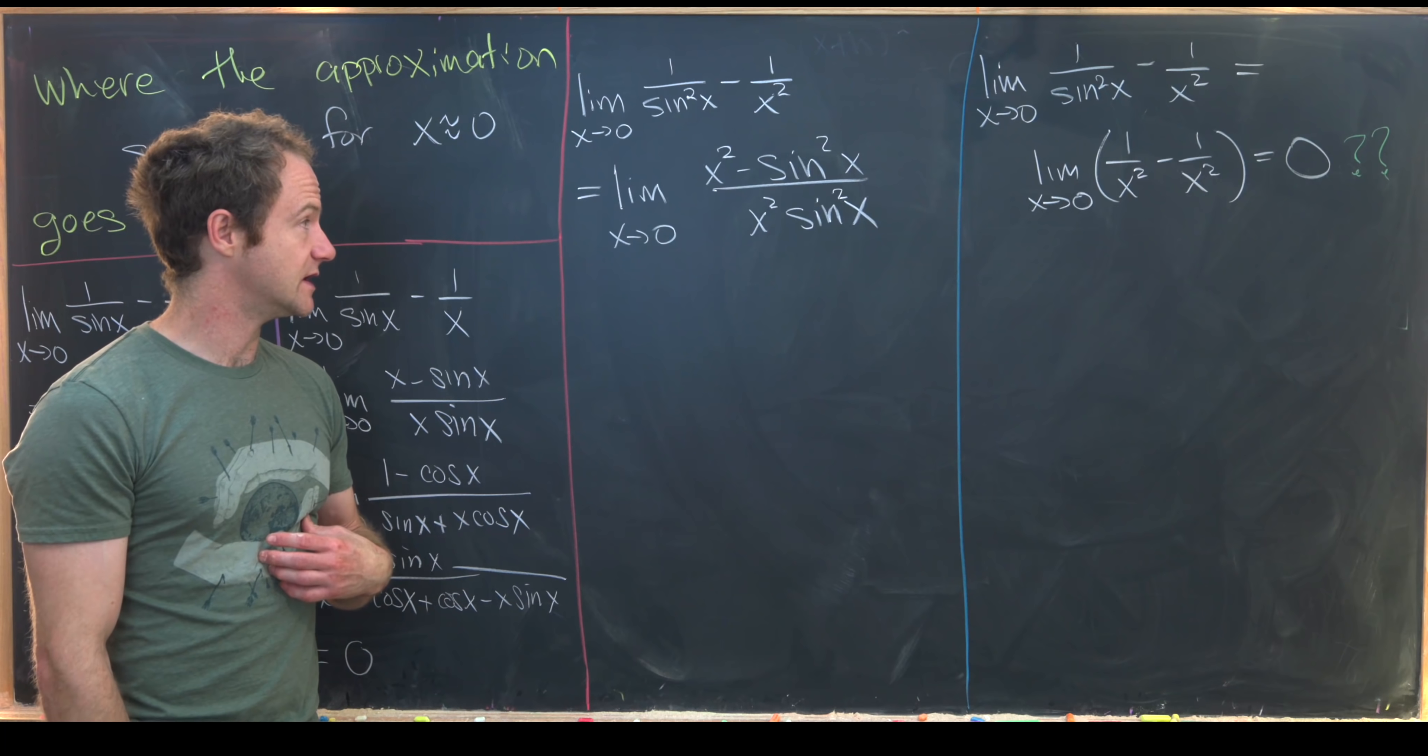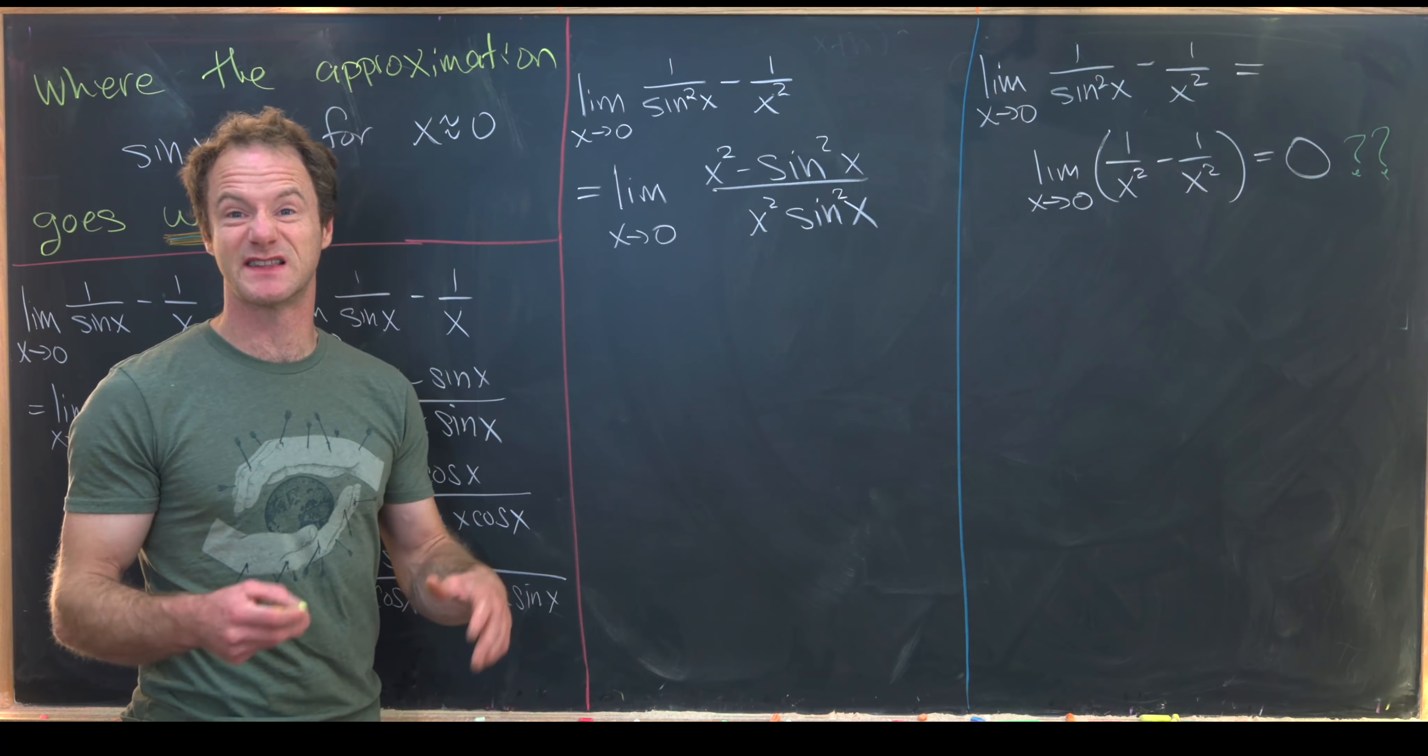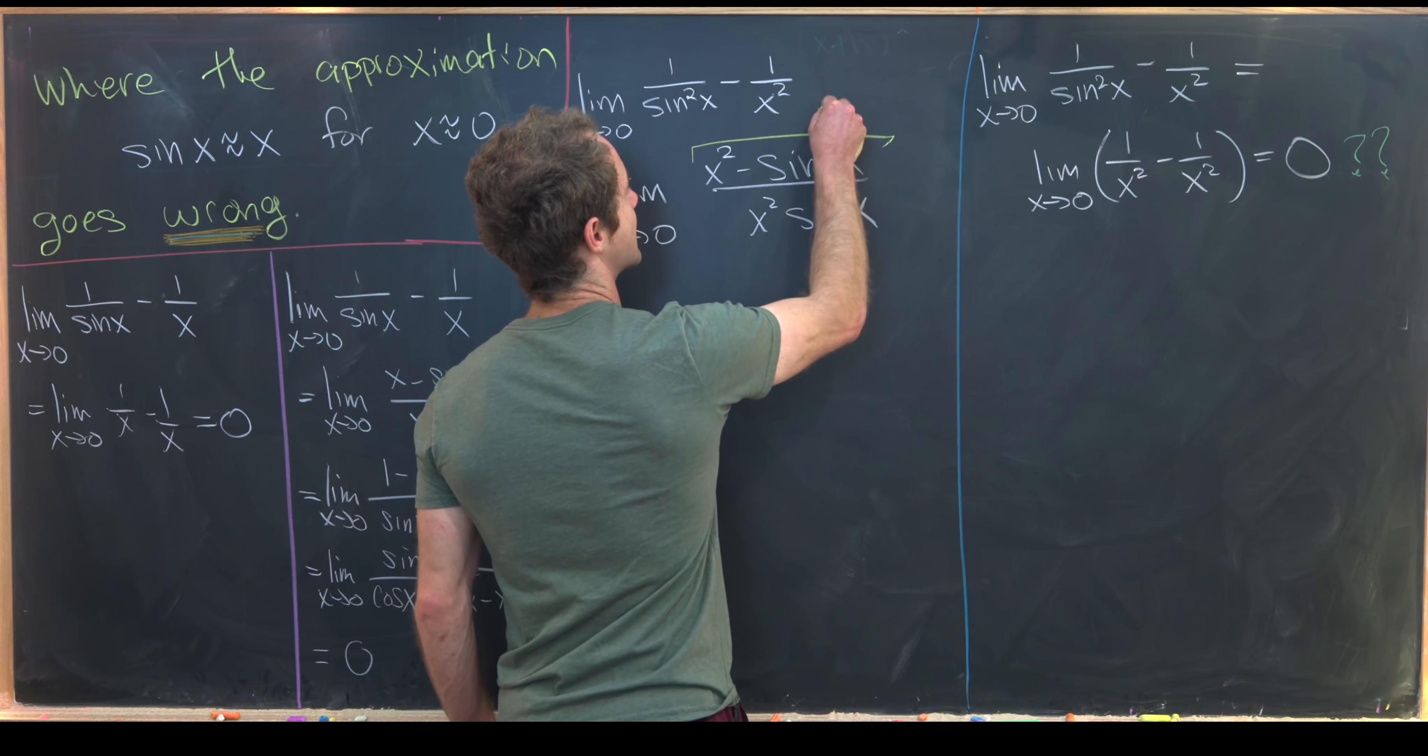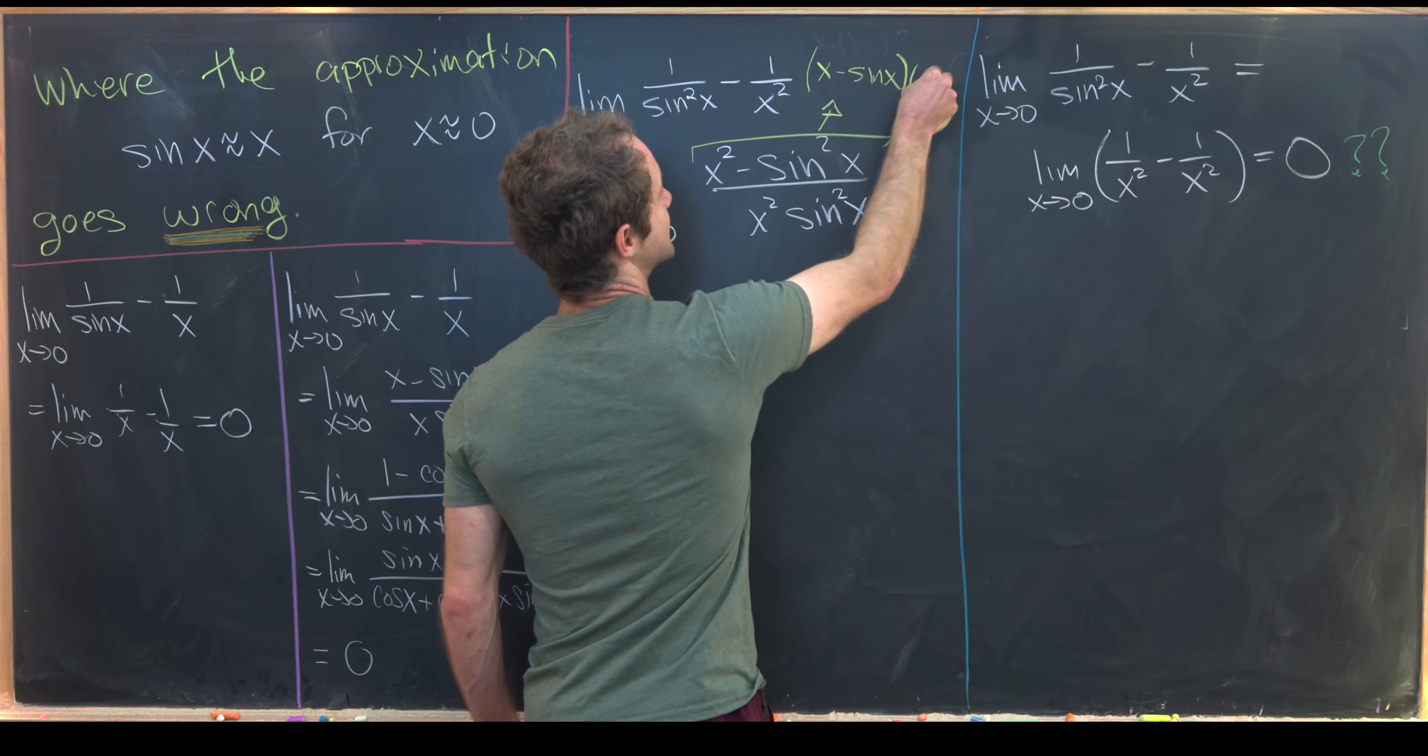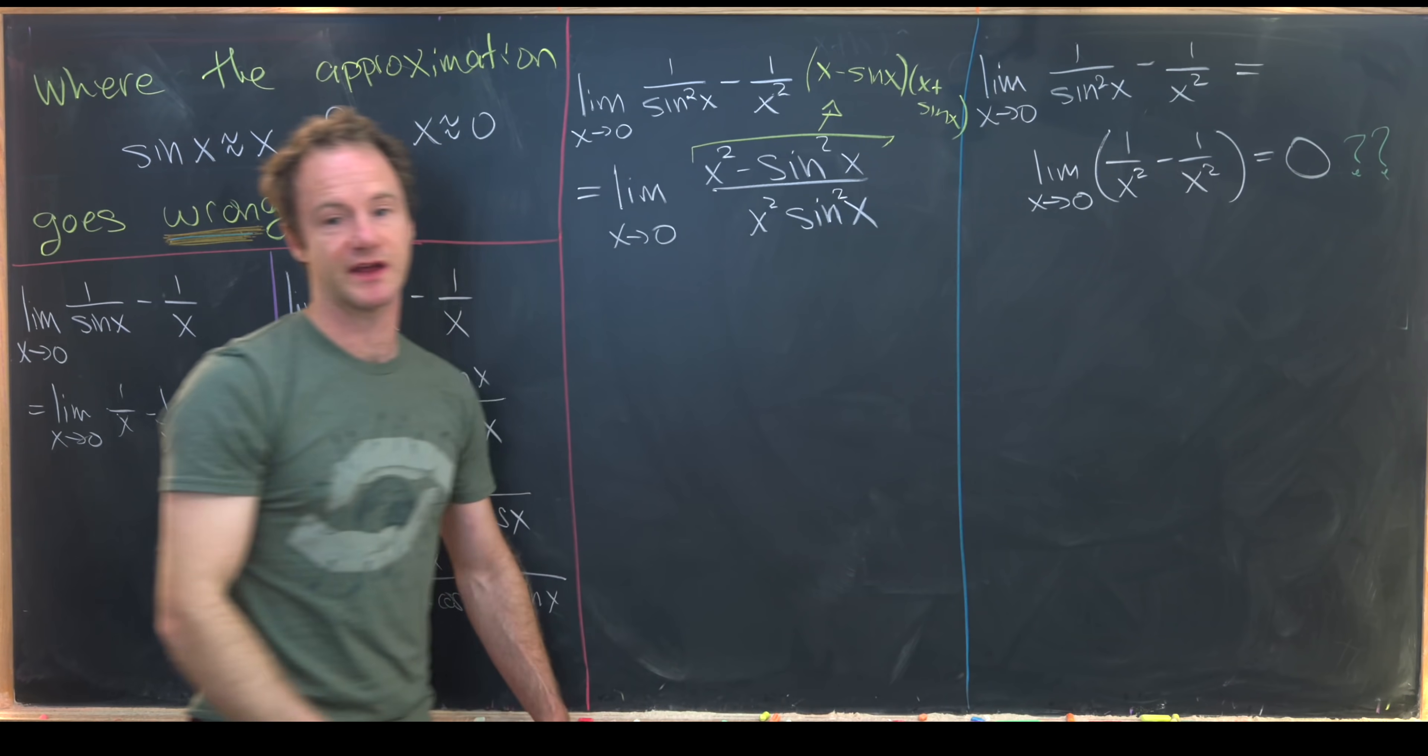And the way that we want to do it is to rewrite this into the product of some limits that are easier to find. So let's first notice that this guy right here is a difference of squares. We can rewrite it as x minus sine x times x plus sine x. And so that'll actually be pretty helpful.